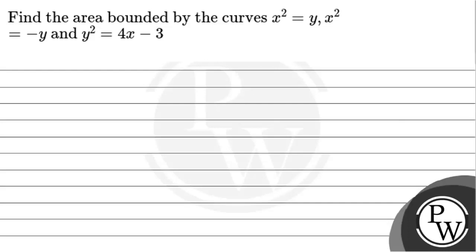Hello, let's get to the question. The question says: find the area bounded by the curves x² = y, x² = -y, and y² = 4x - 3. So we have 3 curves in the question, and we have to calculate the area bounded between these curves.